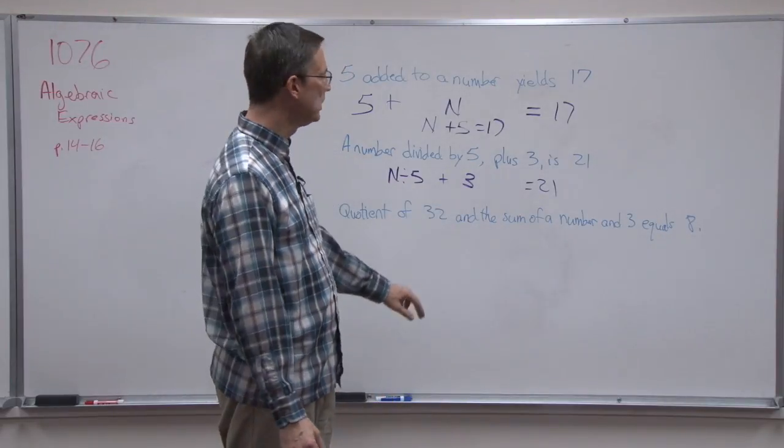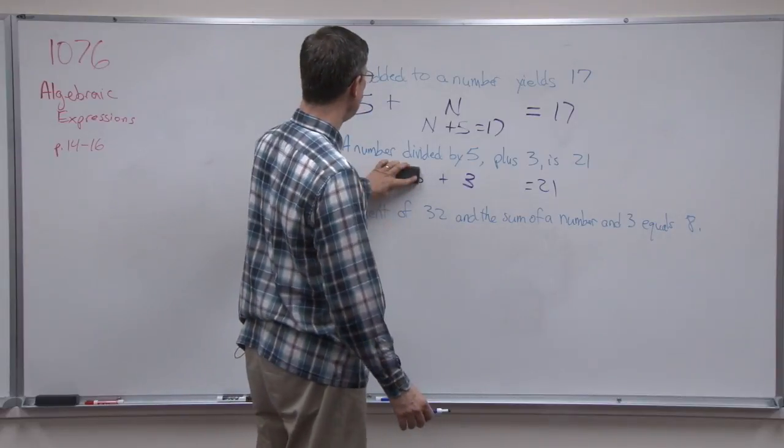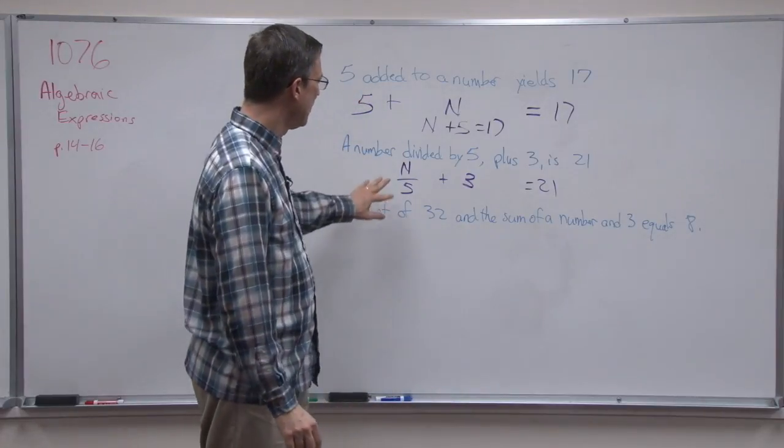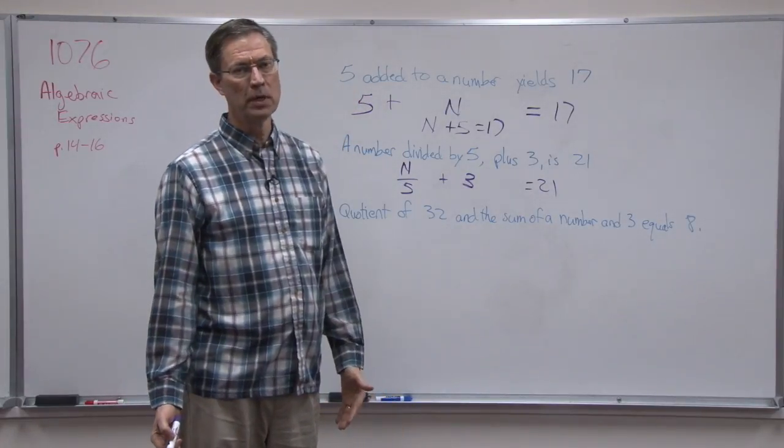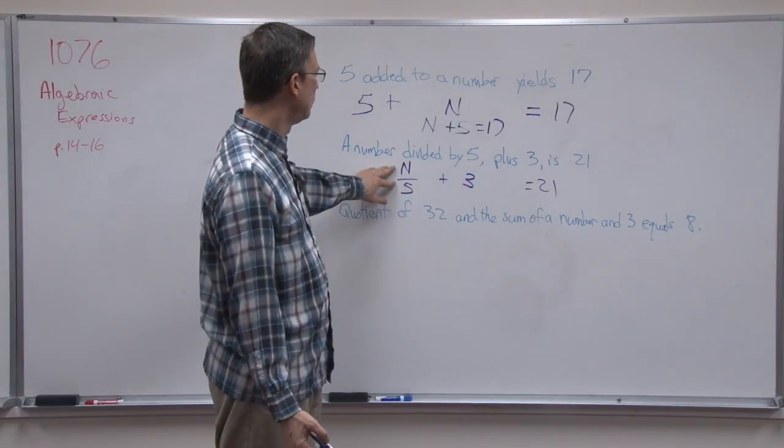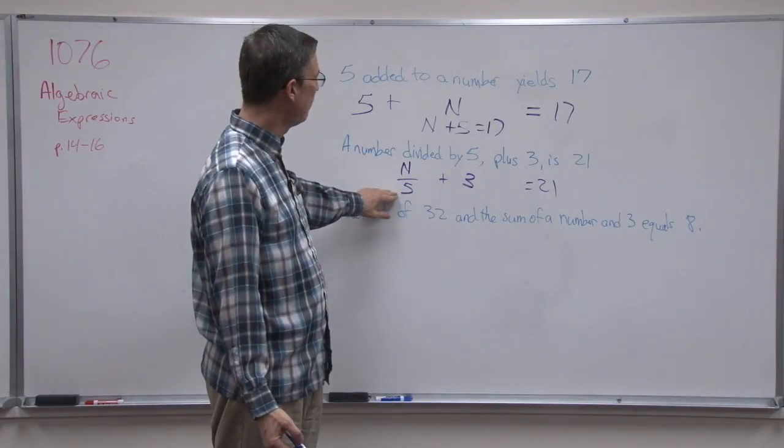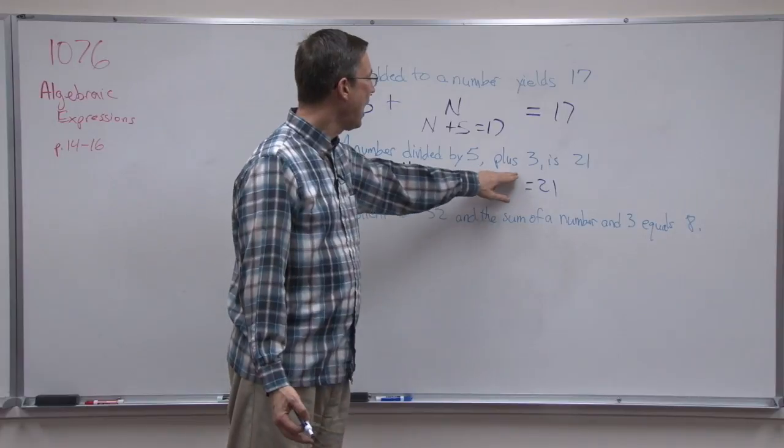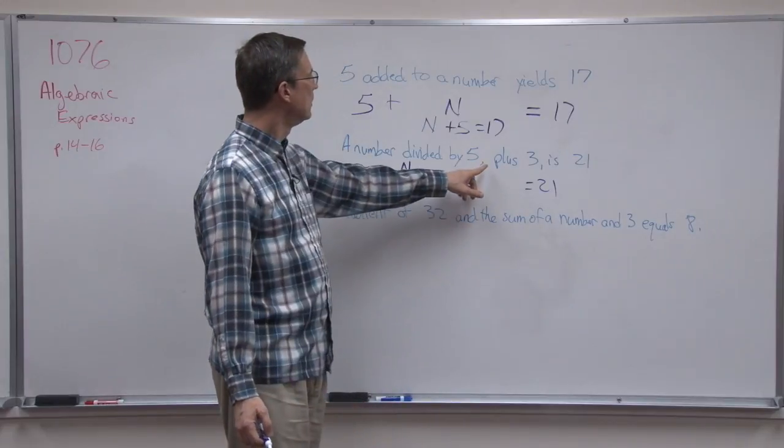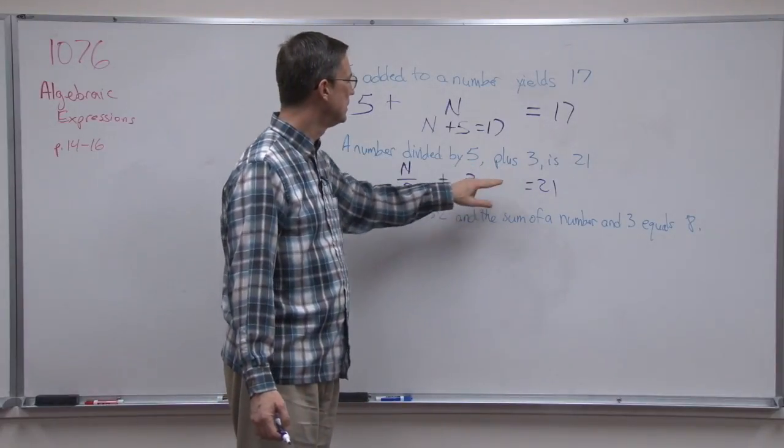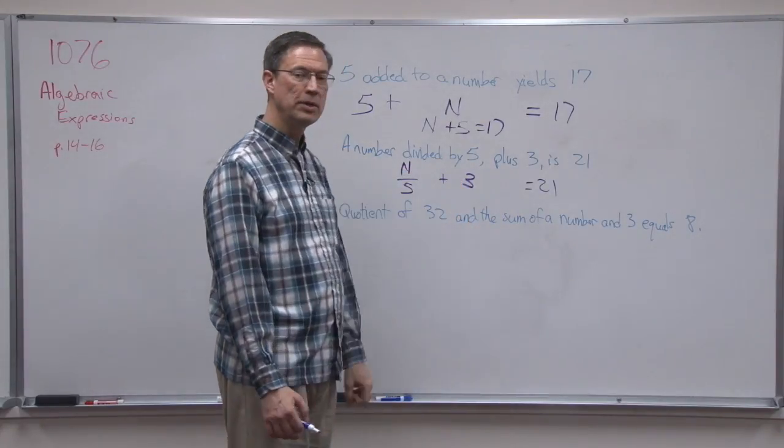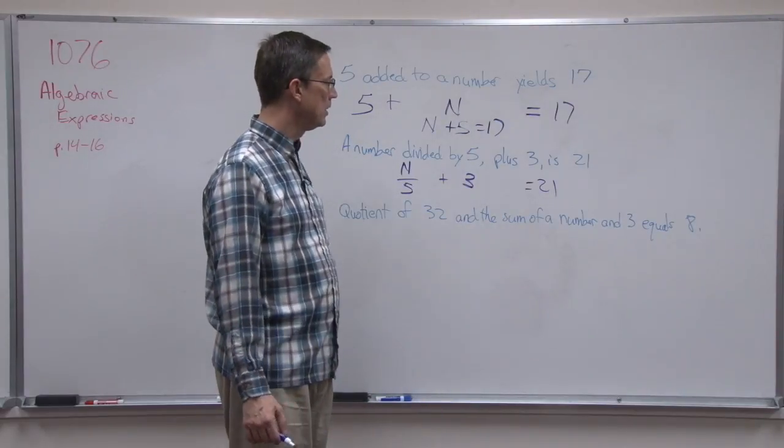Now the score key probably does not have it written this way. They are probably going to write it as N over 5, because whenever we have a fraction like 12 over 3, that means divide. 12 divided by 3 would get 4. So this is another way of writing a number N divided by 5. We're going to add 3, plus 3 equals 21. The fact that they put a comma here makes clear that this is a separate thing. We're not dividing by 5 plus 3. The plus 3 is off to the side.